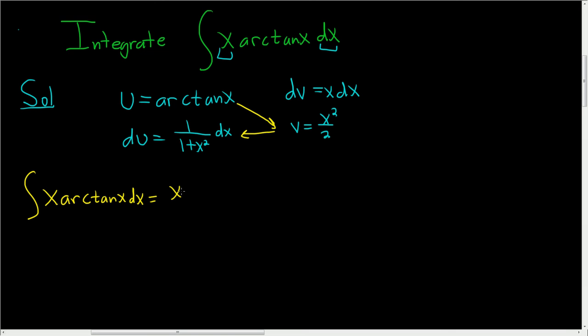So uv, so x squared over 2 arctan x, minus the integral of vdu. So 1 half, and then x squared over 1 plus x squared, and then dx.